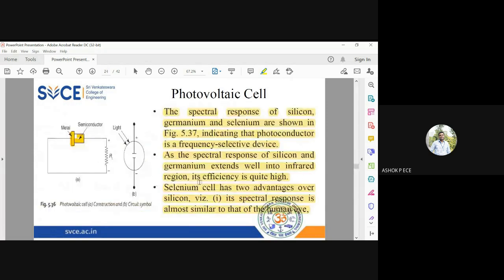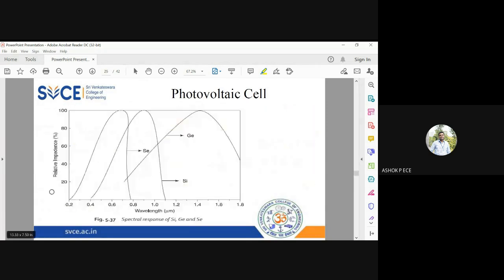Looking at the spectral response curves, the first curve is for selenium, the second is for germanium, and the third is for silicon. The silicon and selenium graphs are very similar, but selenium covers the human eye radiation—the visible band from 400 to 800 nanometers.